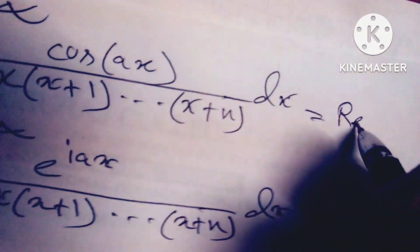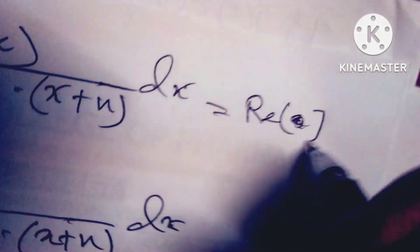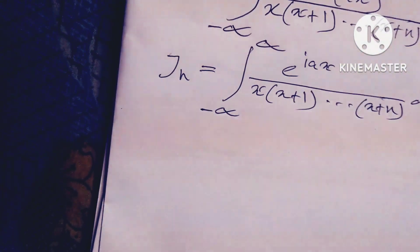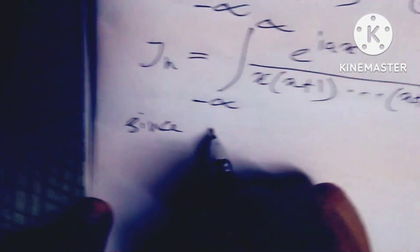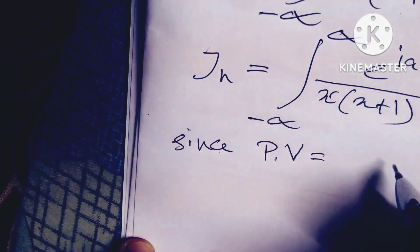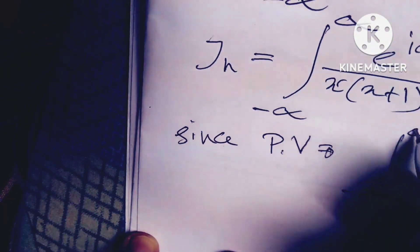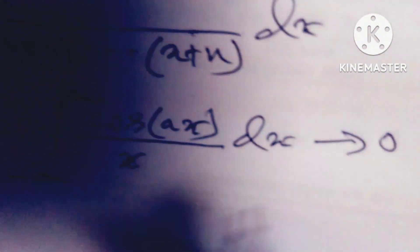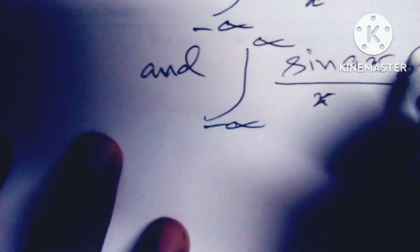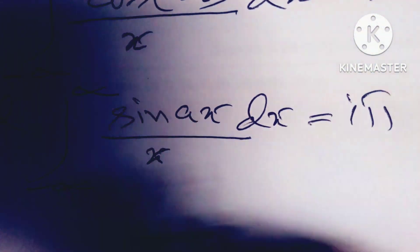Since the principal value of the integral from minus infinity to infinity of cos(px)/x dx equals 0, and the integral from minus infinity to infinity of sin(ax)/x dx equals i·pi, we use these standard results.